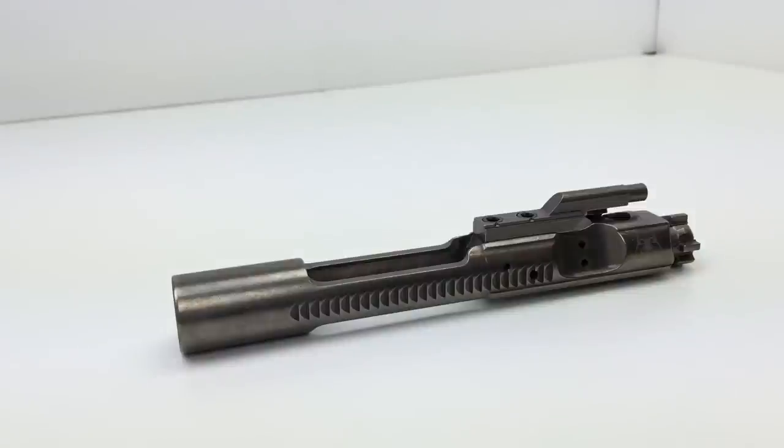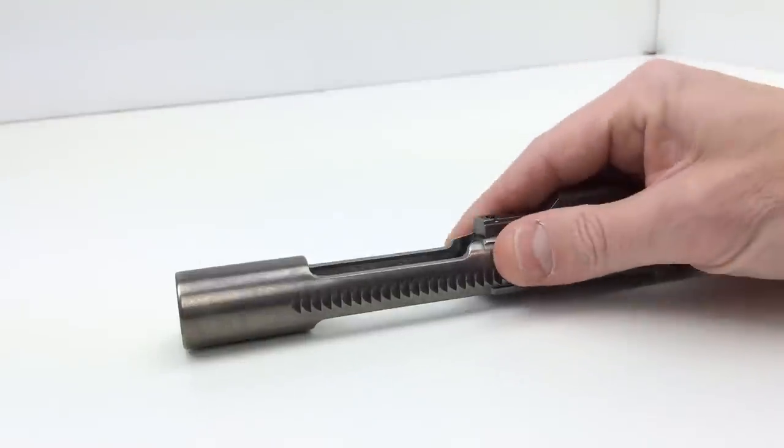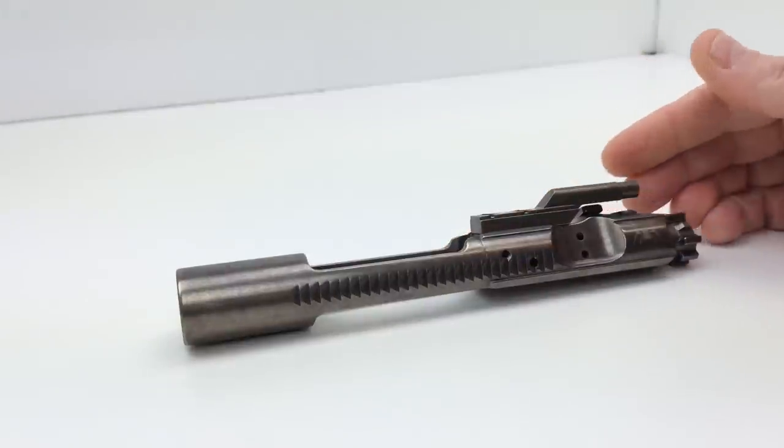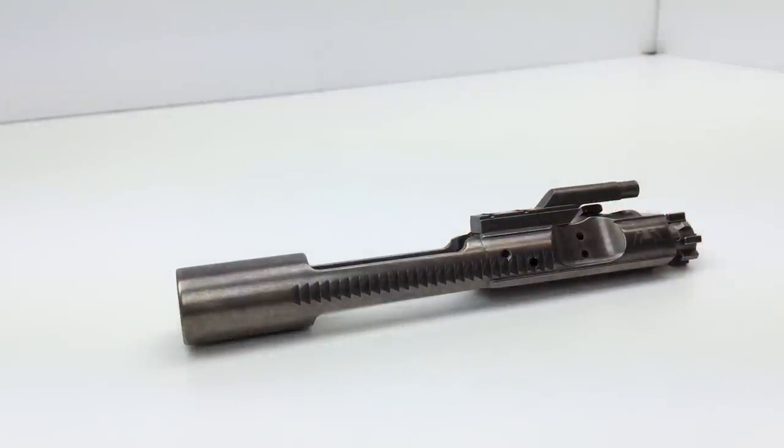Now, for many people this probably will not be an issue. You'll get it and you'll look at it and say, okay I'll put it in the gun and it'll work. But for another group of people, they expected to receive a shiny polished nickel boron bolt carrier group and instead they got something that looks like this. It's dull, it's sticky, it basically looks like it's a used bolt carrier group.